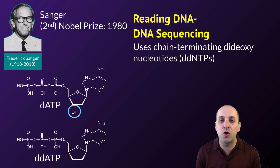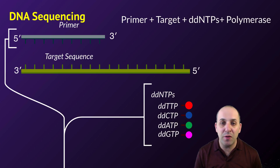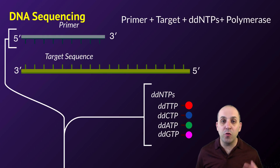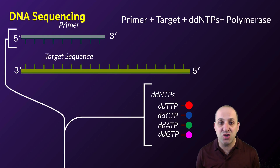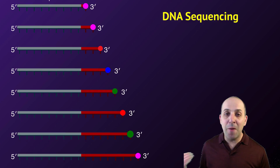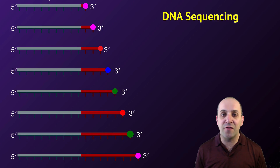In order to sequence a molecule of DNA, you need a primer, a target sequence, polymerase, regular nucleotides, and the modified dideoxynucleotides. All of these are placed into a common reaction vessel where replication is allowed to occur. As replication occurs, every time the modified nucleotides are incorporated into the strand, replication will cease. The results are then visualized to determine the sequence — for instance, reading from the top down, you might read the sequence as GGTCATAG.